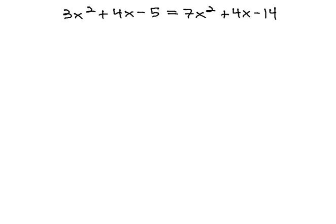So let's do that with this equation, 3x squared plus 4x minus 5 equals 7x squared plus 4x minus 14.